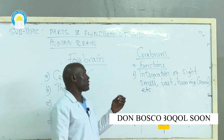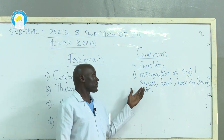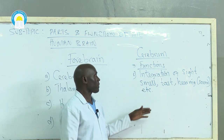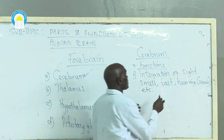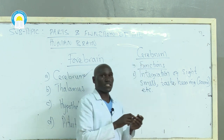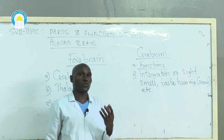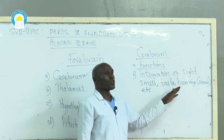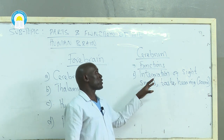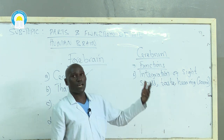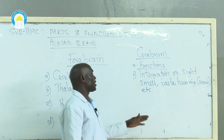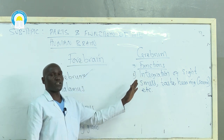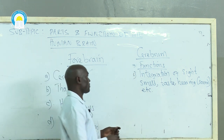Cerebrum is capable of integrating smell, whether bad or good. It is responsible for integration of taste — sweet taste, bitter taste, etc. It is also responsible for integration of sound, which brings about hearing. So that is one of the functions of the cerebrum.